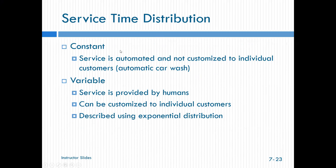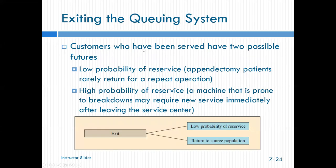Our service time distribution, we can say it's either constant, so it's automated, we don't customize it, or it's variable. Service is provided by humans, we can customize it to individuals, and it can be described using exponential distribution. So it's either constant or variable slash exponential distribution. And then in our service system, the exiting the system, do customers that exit the system, do they have a low probability of reentering the system or a high probability of reentering the system? So if we think about appendectomy patients, they're probably not going to return for another operation. If our machines are subject to breakdowns, they may require immediate service right after they leave the service system.